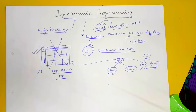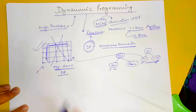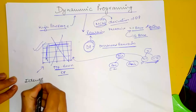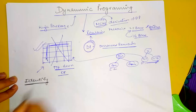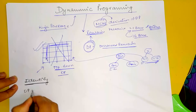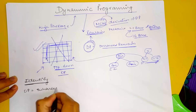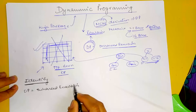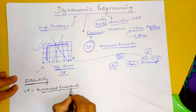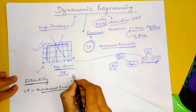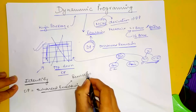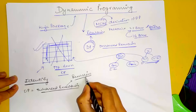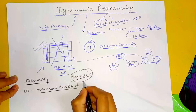So this is DP. First of all, we identify DP. How do we identify DP? DP is enhanced recursion. Since it is enhanced recursion, the parent problem is recursion. We study DP through recursion.